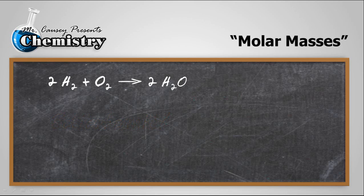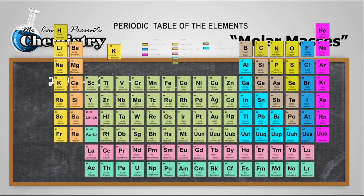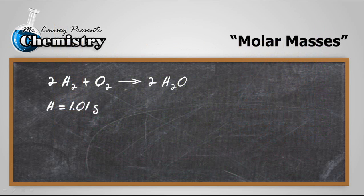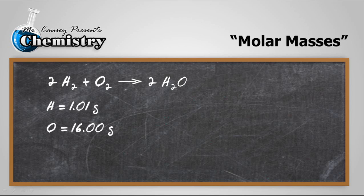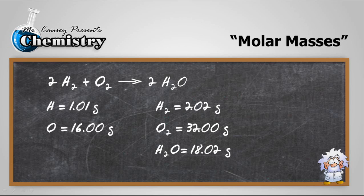Alright let's figure out the molar masses. According to the periodic table, the molar mass of hydrogen is 1.01 gram and the molar mass of oxygen is 16.00 grams. Therefore pure hydrogen is going to be 2.02 grams per mole, oxygen is going to be 32.00 grams per mole and water is going to be 18.02 grams per mole. Now if you're not sure how to do molar masses, you need to go find the video lesson on molar masses.